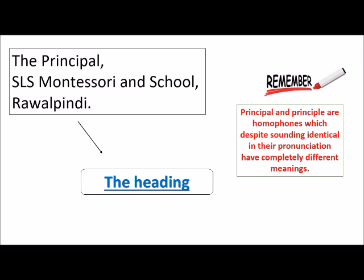The application starts with the name of the person to whom you are writing. It is written towards the left-hand side of the page and is followed by a comma — for example, 'The principal comma.' Next comes the name of the place that person works at, also followed by a comma. The address continues and is still not completed, so we put a comma. At the end, you write the name of the city where the branch is located.